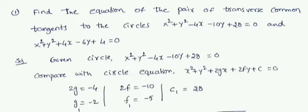Hello friends. Today's problem is: find the equation of the pair of transverse common tangents to the circles x² + y² − 4x − 10y + 28 = 0 and x² + y² + 4x − 6y + 4 = 0. First, take the first circle: x² + y² − 4x − 10y + 28 = 0.